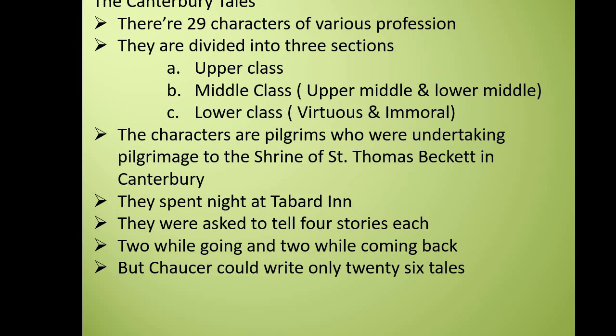Interestingly, these 29 characters came from various professions — there was the Knight, the Pardoner, the Miller, the Wife of Bath, and many others. Through these characters, Chaucer highlighted medieval English society. The 29 characters were divided into three sections of society: upper class, middle class (divided into upper middle and lower middle), and lower class (divided into virtuous lower class and immoral lower class). This class division was very much present in medieval England.